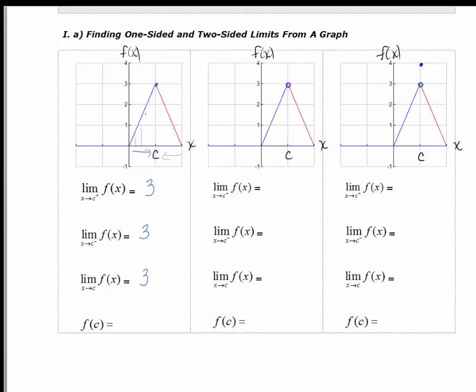f of c is something you have already worked with — that's just function notation for the value of the function at c. At c, we can see that f of c is actually 3. So here's a scenario where the left-hand and right-hand limits are the same, the two-sided limit is the same, and the function value happens to be equal to the limit.